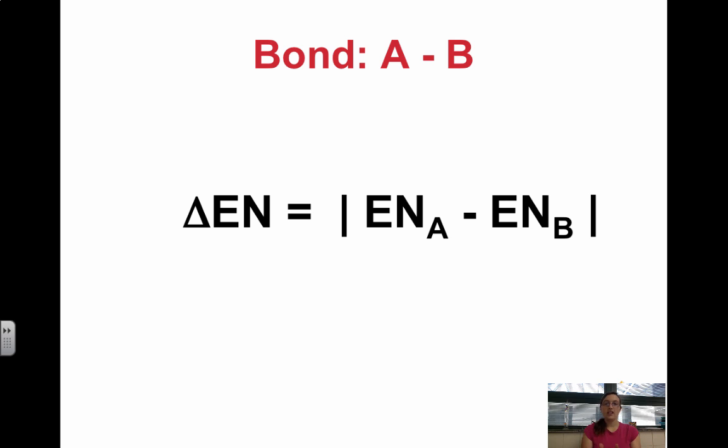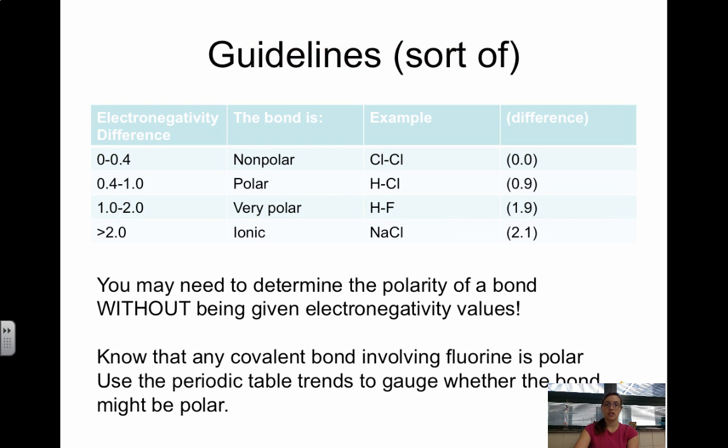So a way to figure out if something is polar, nonpolar, or ionic is by looking at this difference in electronegativity. To calculate the difference, delta means change in. So we want to find the difference in electronegativity. We need to take the absolute value of A minus B. The difference in electronegativity value always needs to be positive. That's why we're taking this absolute value. So you find the difference in electronegativity, and that's what we're going to use to determine if a bond is nonpolar, polar, or ionic.